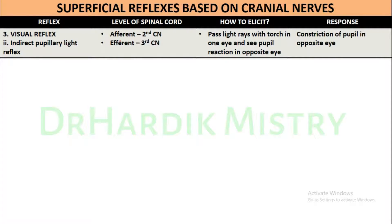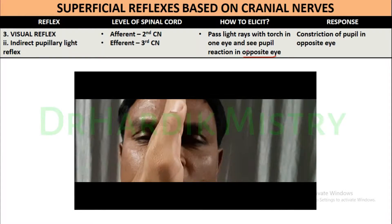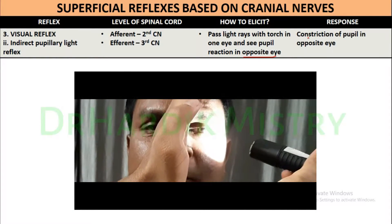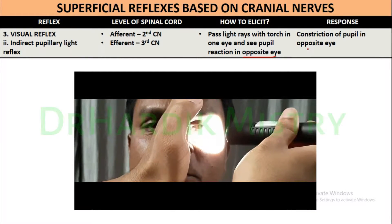The indirect pupillary light reflex involves the second cranial nerve — the optic nerve — in front, and the third cranial nerve — the oculomotor nerve. Pass light with a torch in one eye and see the pupil reaction in the opposite eye. To elicit it correctly, ask the patient to place the ulnar border of the hand in front of the nose, so the light passed in one eye cannot enter the opposite eye. The response will be constriction of the pupil in the opposite eye.